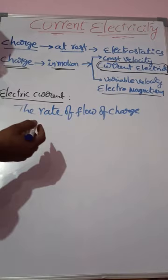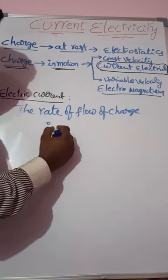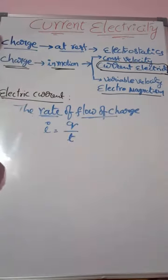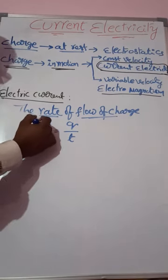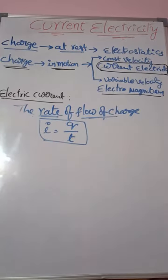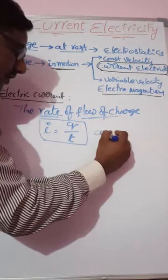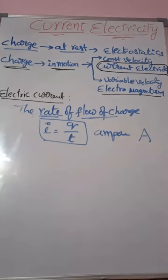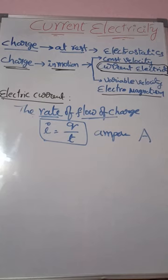The formula for electric current is I = Q/T. The units of electric current are ampere, or simply written as capital A. To repeat: electric current is defined as the rate of flow of charge through a conductor. I = Q/T, and its units are ampere.